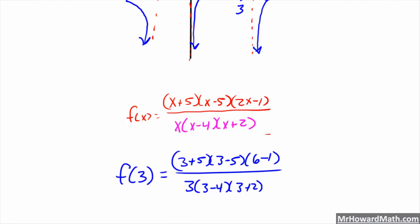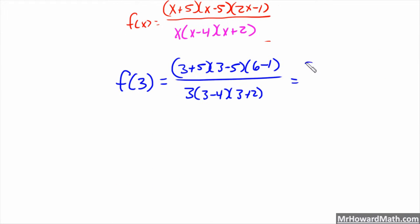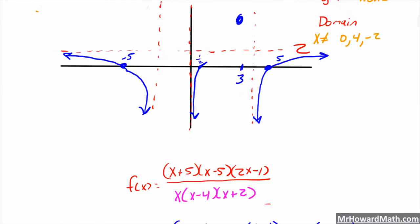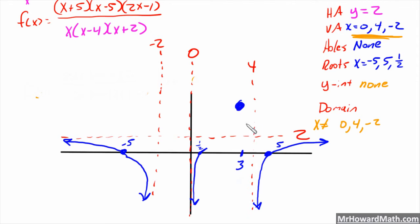The sign analysis gives us 8 × (-2) × 5 on top and 3 × (-1) × 5 on the bottom. That's -80 over -15, which is a positive value of about 5 — above the horizontal asymptote of y = 2. So the graph is up in that positive region, confirming the shape of that section curves up through the root and approaches the vertical asymptote from above.